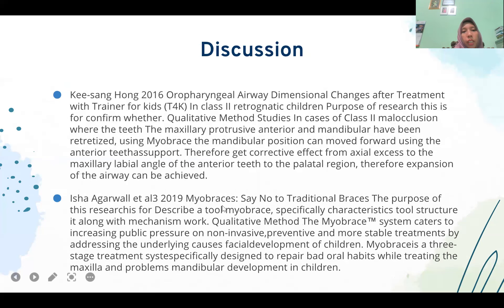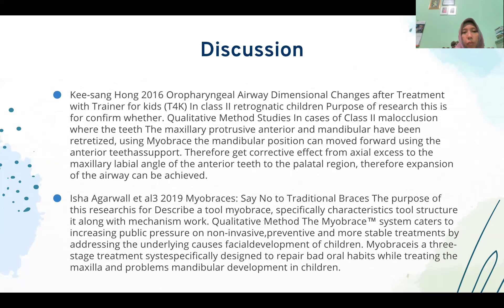Discussion. First study: Baiki Sanghong, 2016 — a periapical radiograph study of differential changes with treatment using a trainer for kids in Class II retrognathic children. The purpose of the research was to confirm whether qualitative methods in Class II malocclusion, with maxillary protruding anterior and mandibular retrognathism, could be treated using myobrace, resulting in forward mandibular movement.